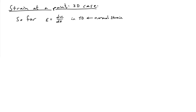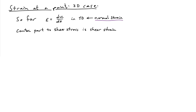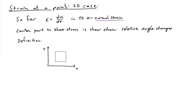I'd like to now move on to extending our notion of strain to a point-wise notion in the full multidimensional case. So far what we have is a definition of strain defined in terms of the derivatives of the motion. In the 1D case, we have epsilon equal to du/dx, where u is the displacement in the x direction. This is what we call normal strain. As a first step, let's get a corresponding concept to shear stress, known as shear strain, which is defined through relative angle changes.